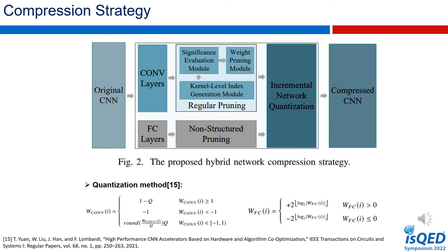Leveraging the different characteristics of the CONV and FC layers, a hybrid compression strategy is proposed. The model is divided into two parts according to the CONV layers and FC layers. A hardware-oriented regular pruning (HRP) is designed for the CONV layers, so that the compressed CONV layers have regular sparsity and can be efficiently calculated by the parallel architecture. For the FC layers, which contain more redundant parameters and greater robustness, non-structured pruning is applied to eliminate as many parameters as possible and improve the compression ratio.